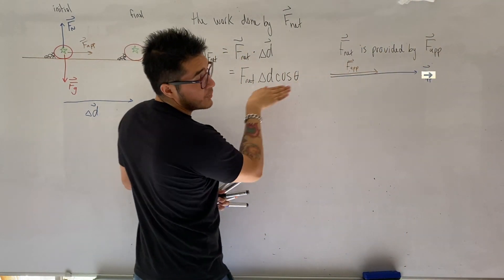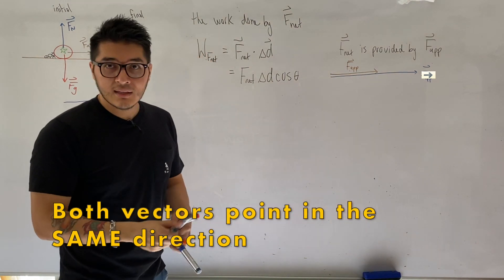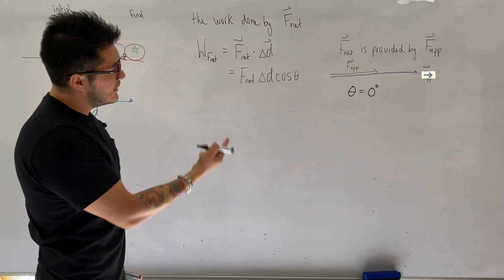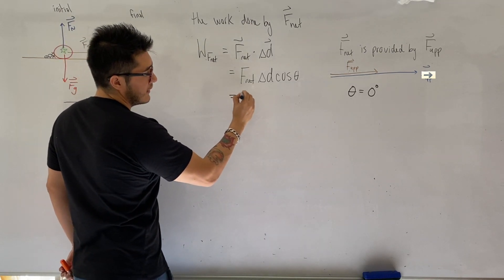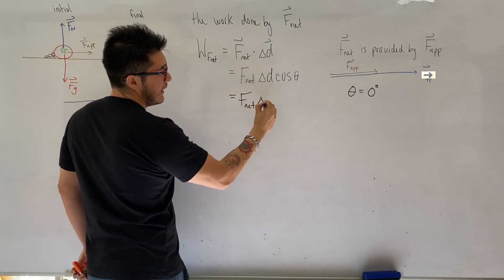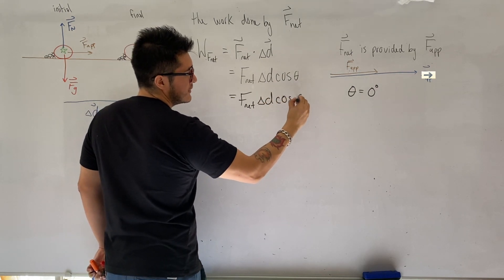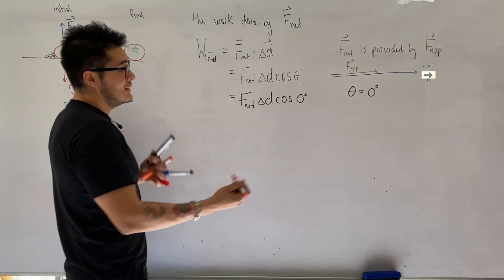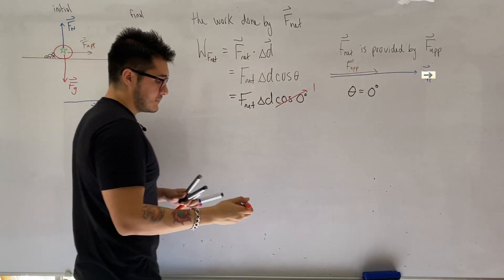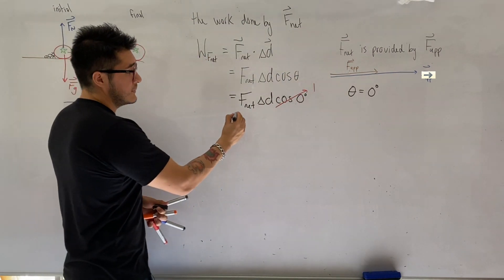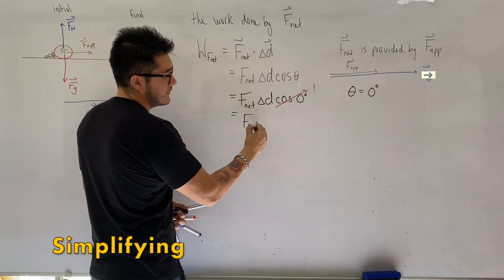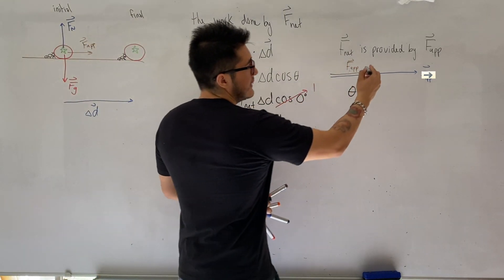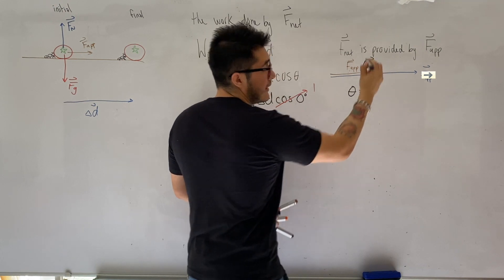Since the net force — which is the applied force — and the displacement vector are both pointing to the right, the angle formed between them equals zero degrees when joined tail to tail. Plugging that into the formula: magnitude of the net force times magnitude of the displacement times cosine of zero degrees. Cosine of zero degrees equals one, so this simplifies to net force times displacement. The net force and applied force are the same in this case because the other two forces cancel out.